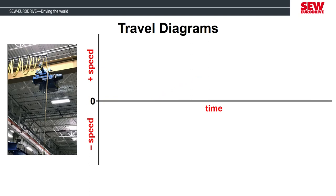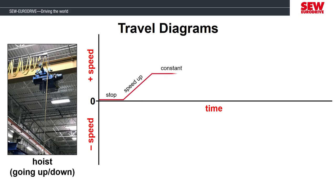Let's look at the same hoist example again, but now we will combine the hoist coming up and coming down. This diagram is over time again, so this can happen as fast or slowly as needed. You're going to see the same thing before where the motor is stopped, then accelerates to a constant speed, then after some time decelerates back to being stopped. Once the hoist is ready to go down, it will accelerate to a negative constant speed, then decelerate from the negative speed back to being stopped.